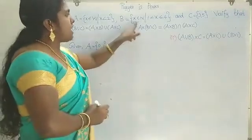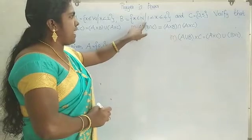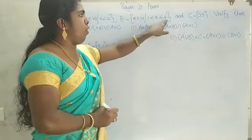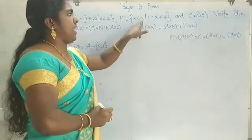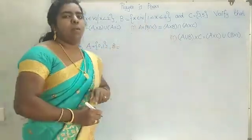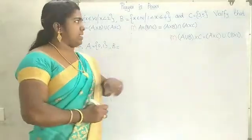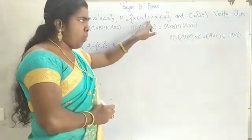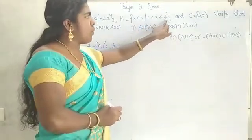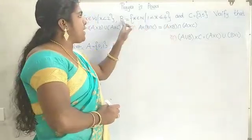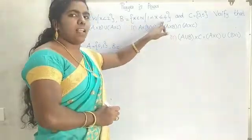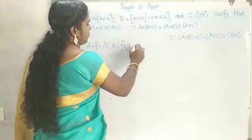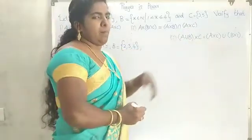B is equal to the set of X belonging to N such that 1 is less than X, less than or equal to 4. N means natural numbers, starting from 1, 2, 3, and so on. Since 1 is less than X, we do not include 1. Since X is less than or equal to 4, we include 4. Therefore, B is equal to {2, 3, 4}. And C is equal to {3, 5}.